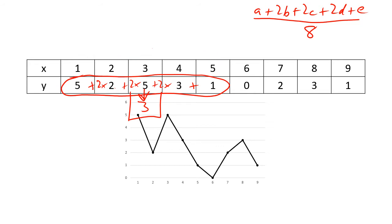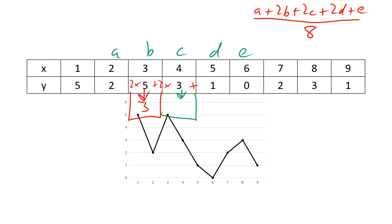Then we repeat the whole process again — we move our a, b, c, d, e along one position. Now in green: the five numbers we're looking at are centered here. So it's 2 + (2×5) + (2×3) + (2×1) + 0. Add all that up and divide by 8, you get about 2.5 — call that 3.